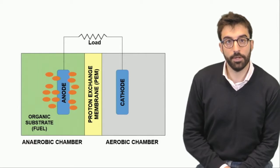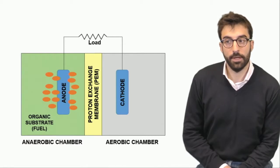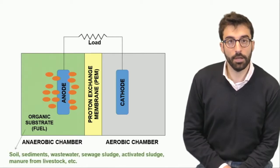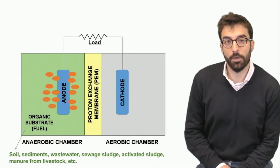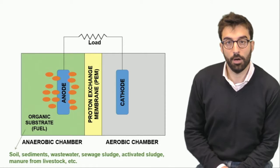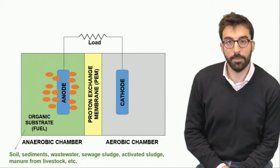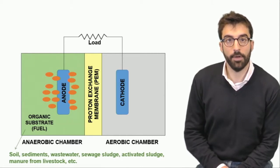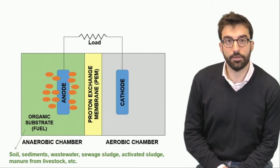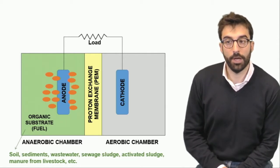What is peculiar is that in the anodic chamber, what is present? It is soil or sediments or any organic matter that can be considered the fuel of the fuel cell. So we can have sediments, wastewater, sewage sludge, activated sludge—usually waste material that needs to be stabilized so that we can have the double effect of energy production and stabilization of waste.